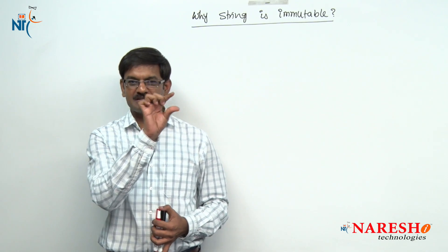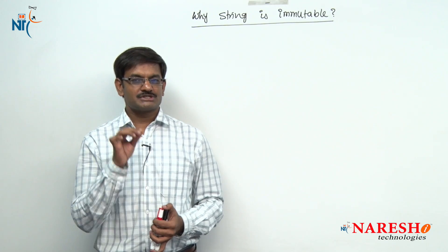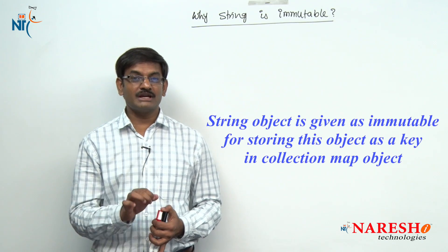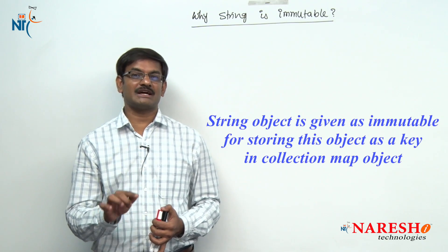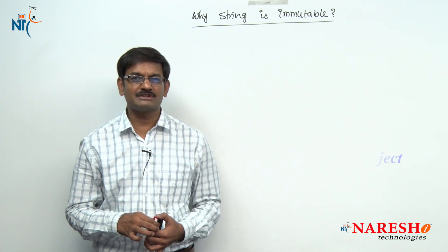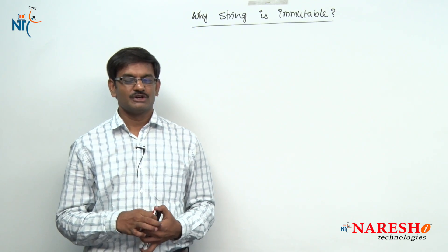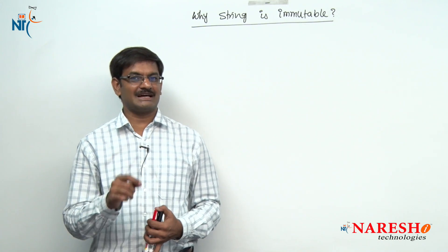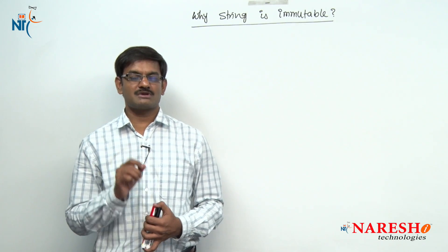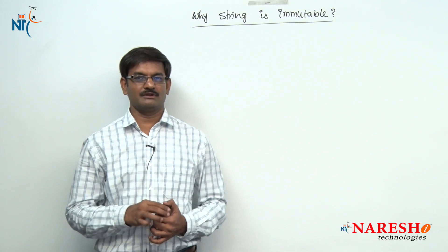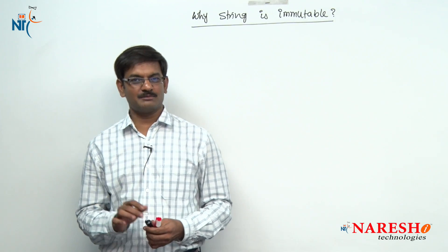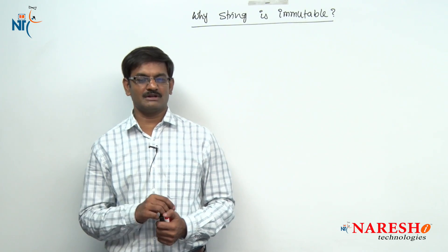Let me prepare a clear statement. String object is given as immutable for storing this object as a key in a collection Map object. You know one of the Map type objects is Hashtable. To store a string object as a key inside a Map object, string is given as immutable.